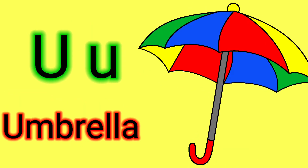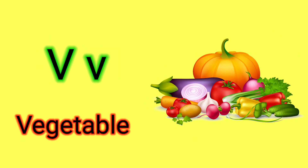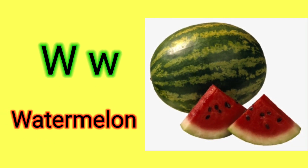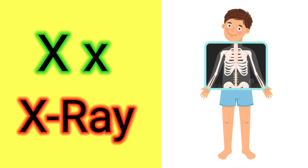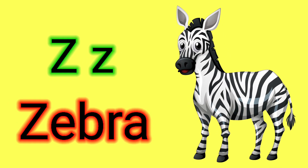U for umbrella, V for vegetable, W for watermelon, X for x-ray, Y for yo-yo, Z for zebra.